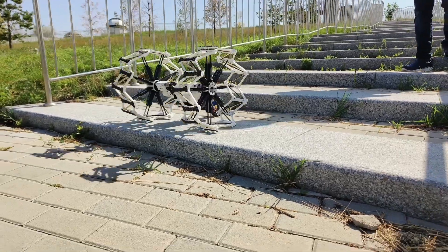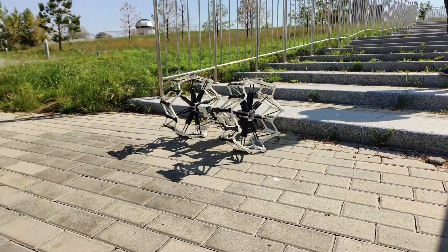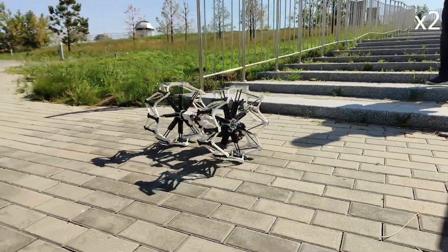We also tested the Improbability Roller outdoors, illustrating different capabilities such as going down a step, traversing uneven terrain, and resizing itself to navigate through a narrow passage.